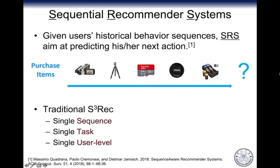As sequential data become prevalent in recommender systems, Sequential Recommender Systems, abbreviated as SRS, have attracted more and more attention. Although many SRSs already exist, these methods only model sequential behaviors based on a single sequence at a single user level, doing single task learning. We call them SSSREC for short. Traditional SSSREC is shown in this figure. The blue timeline indicates a single purchase sequence, and the only task is to recommend the next item to purchase for the user. SSSREC is suitable for recommendation scenarios such as book or movie recommendation. However, our research focuses on recommendation in online games, which faces unique challenges that SSSREC cannot handle well.